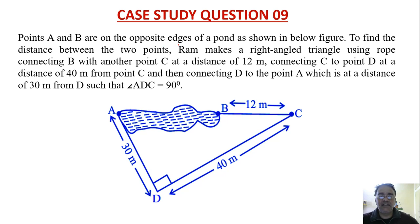Point A and B are on the opposite edges of a pond as shown in this figure. This is pond and A and B are the edges. To find the distance between the two points, Ram makes a right triangle using rope connecting B to C at a distance of 12 meters, again C to D at a distance of 40 meters from C, and again connecting D to A which is at a distance of 30 meters from D such that this angle is equal to 90 degrees. Based on this information and diagram we have to find some answers.